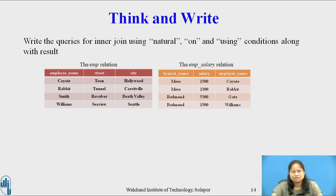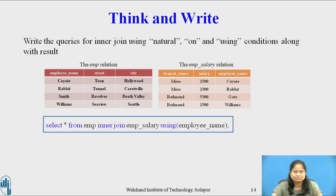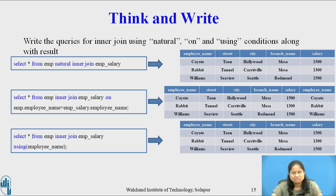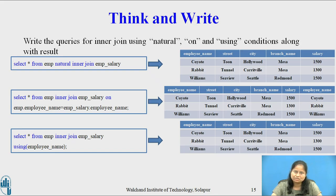Now consider the inner join using the using condition. The query is: SELECT * FROM emp INNER JOIN emp_salary USING (employee_name). Results contain the common attribute employee name only once. The results using join condition natural and using are the same, with the common attribute employee name appearing only once. In join condition on, the common attribute employee name appears twice.